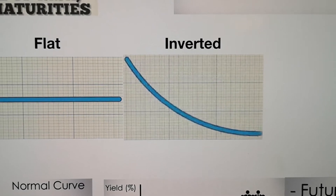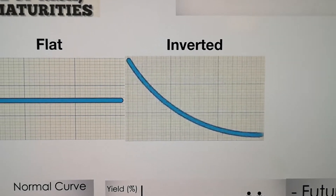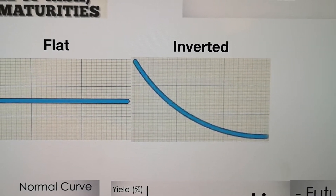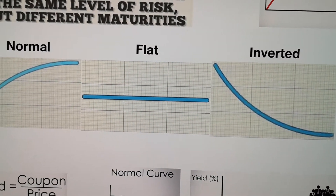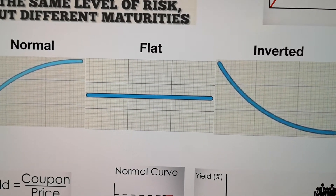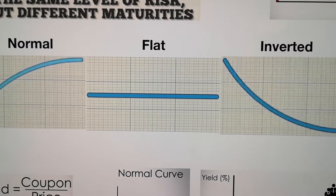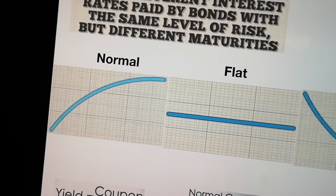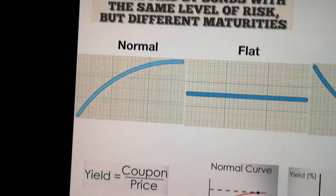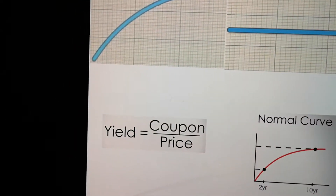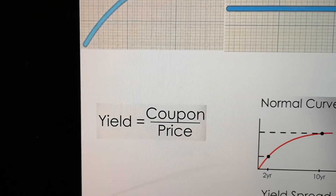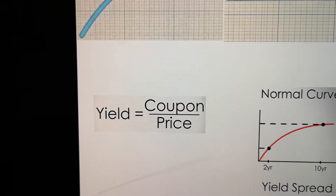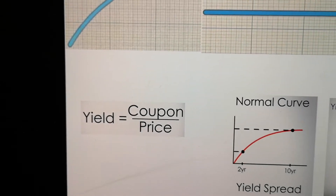On the X-axis are the different terms. For the U.S. Treasury, it can range from 3 months to 30 years. On the Y-axis, that's Yield. What does Yield mean? Yield means the coupon divided by the price — it's a percentage.